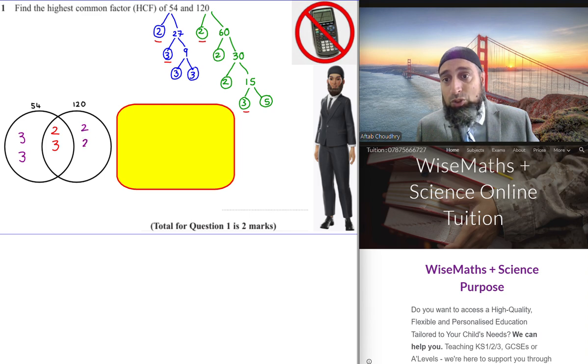What's in the intersection between the 54 and 120. So the highest common factor—we need to multiply 2 multiply by 3, and that should give us 6, and that's your final answer.